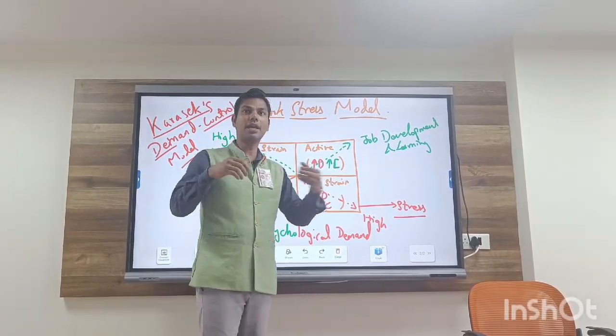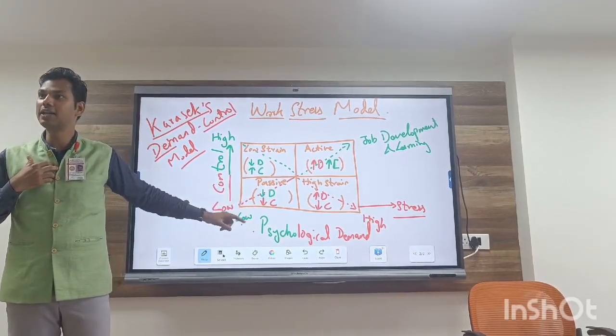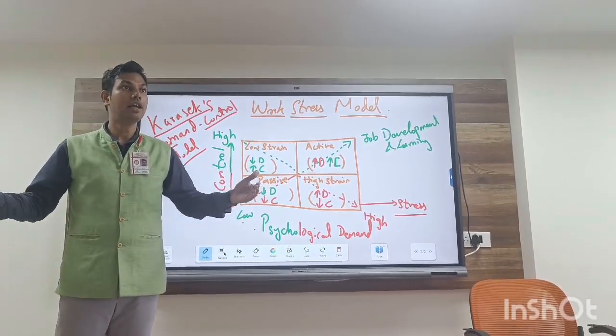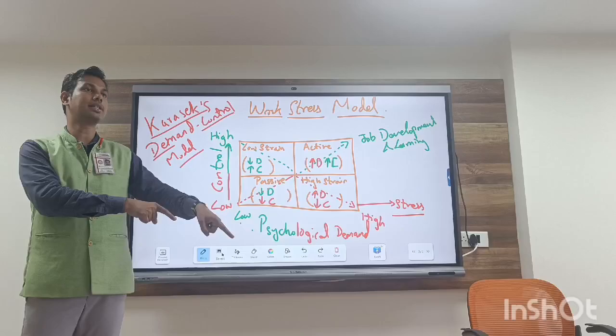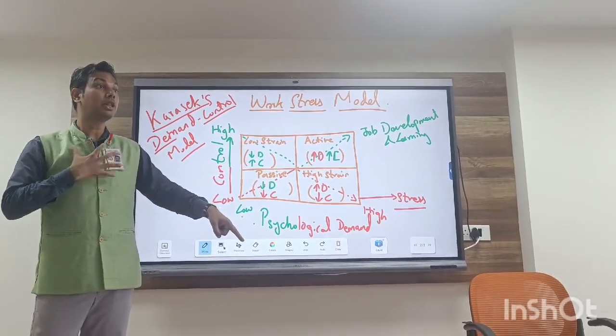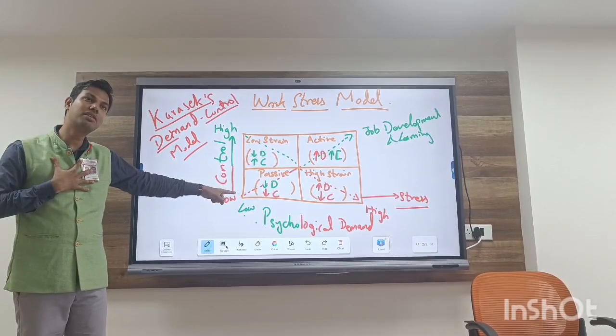Now actively do it. You can say, okay fine, though it means high psychological demand, but things are under my control. I know how to do this thing. Okay, I will hire people in order to do the task. Why? I have control. I have authority. If I don't know anything, then I will do it.